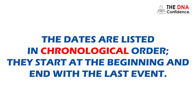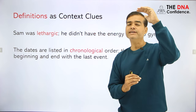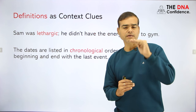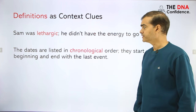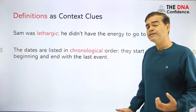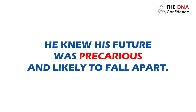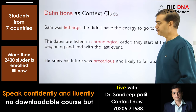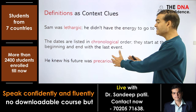'The dates are listed in chronological order' — definition given: they start at the beginning and end with the last event. That is chronological order — a sequence of events, like 1920, 1921, up to 2024. Another example: 'He knew his future was precarious, and likely to fall apart.' Precarious means not safe. When you read the entire sentence, you can guess the meaning of the word.